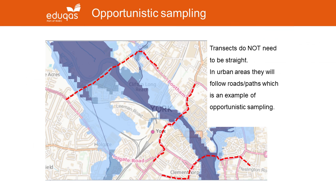Generally, transects are straight lines, but of course it's not always possible for them to be in a straight line, especially in an urban area where you've got to follow roads and paths. For example, if you were doing a transect away from a river in York — an area vulnerable to flooding — you'd almost certainly have to at times take a detour away from the straight line, following roads or paths to get access to various urban land uses.